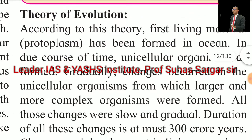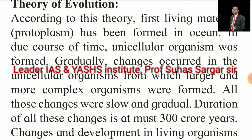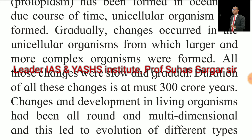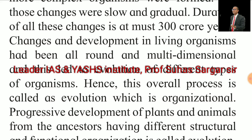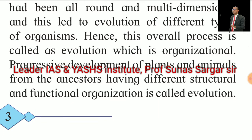Theory of Evolution: According to this theory, the first living material, i.e., protoplasm, was formed in the ocean. In due course of time, unicellular organisms were formed. Gradually, changes occurred in unicellular organisms from which larger and more complex organisms were formed. All those changes were slow and gradual, over a duration of about 300 crore years. Changes and development in living organisms were all-round and multidimensional, leading to the evolution of different types of organisms. Progressive development of plants and animals from ancestors having different structural and functional organization is called evolution.